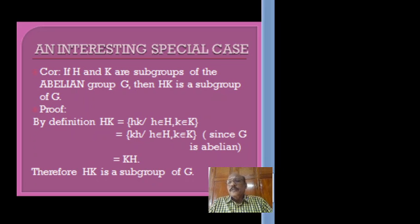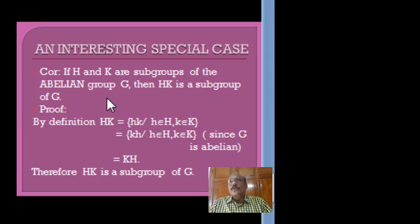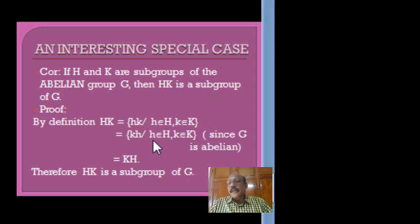Now let us discuss an interesting special case. Suppose H and K are subgroups of an abelian group G; then HK is a subgroup of G. In an ordinary group you must verify HK = KH, but in an abelian group you need not verify that condition. Since G is abelian, hk = kh, so HK = KH automatically. Therefore by our necessary and sufficient condition, HK is a subgroup of G.